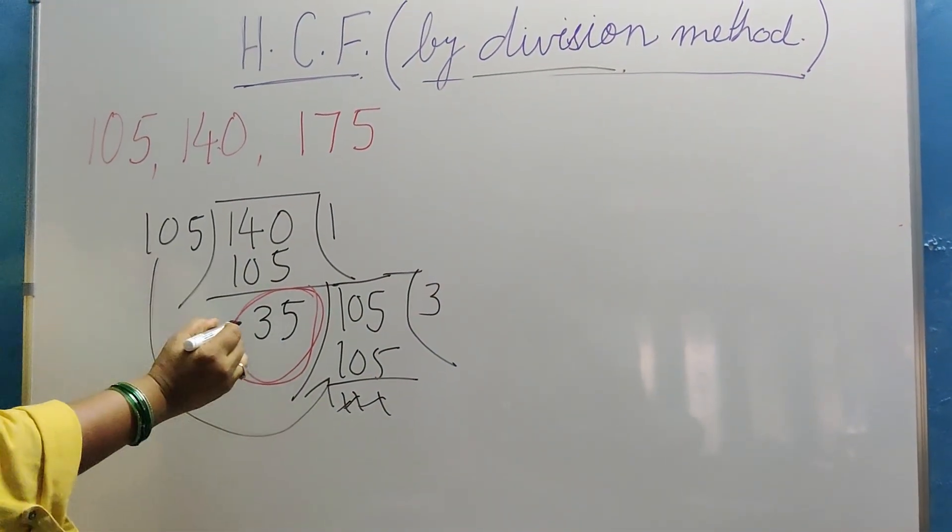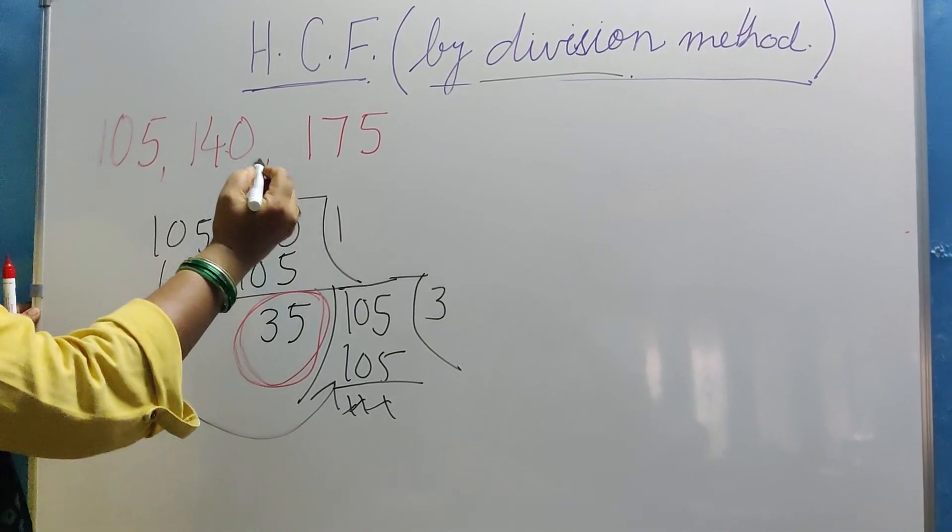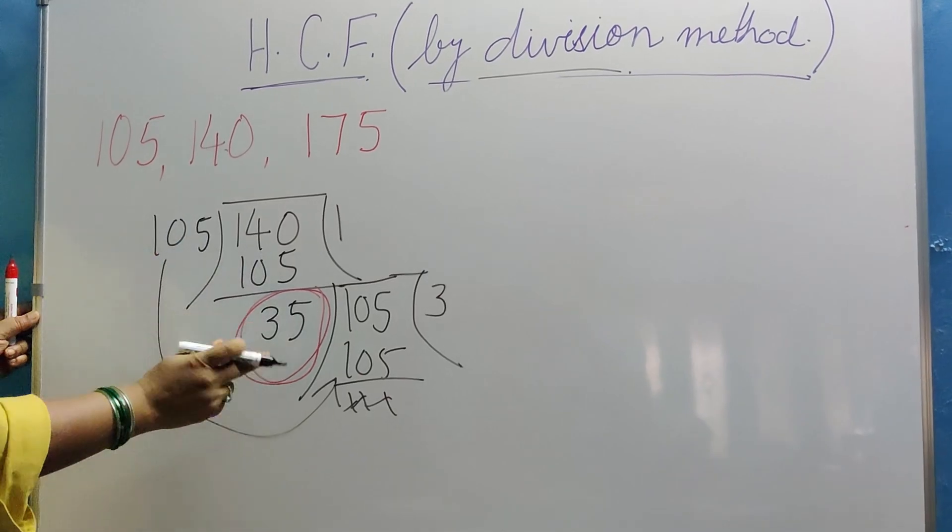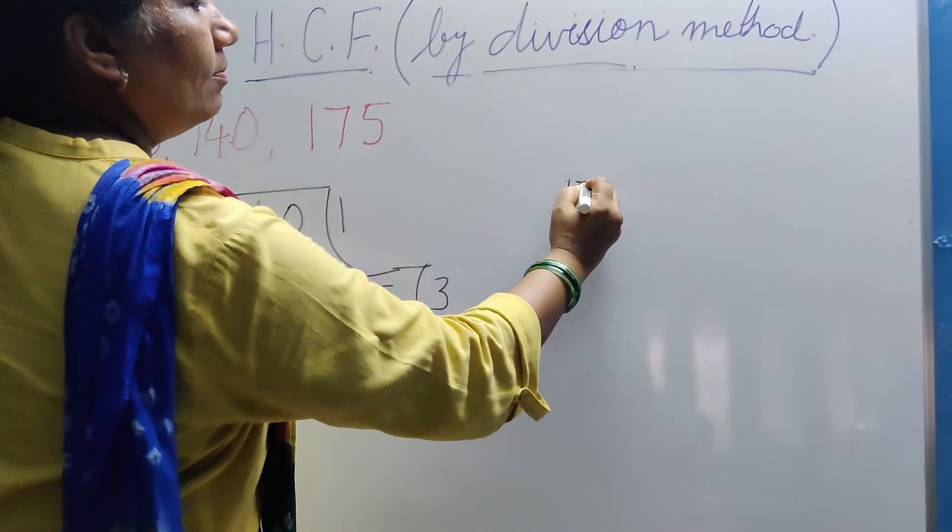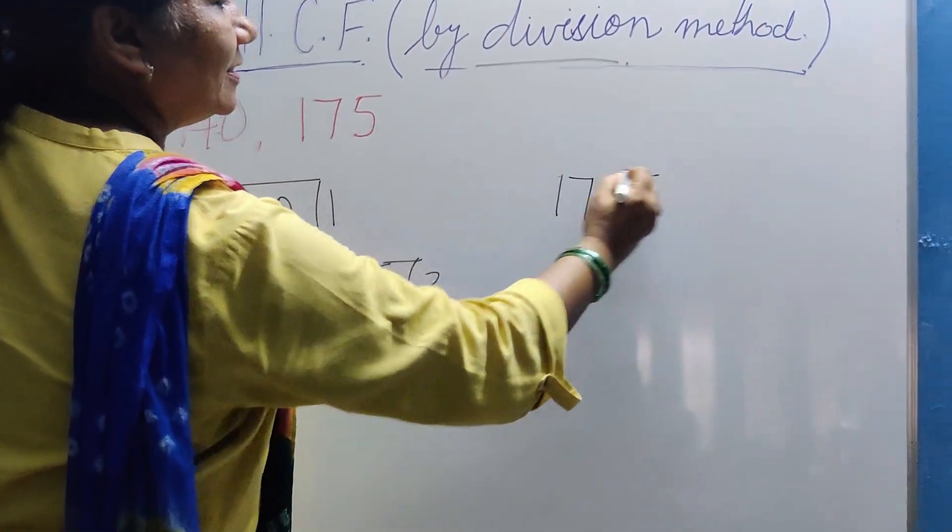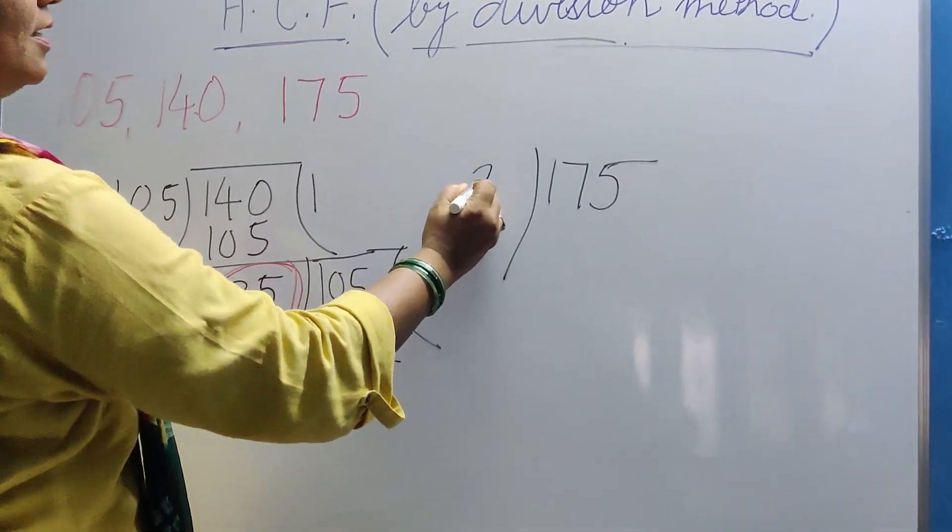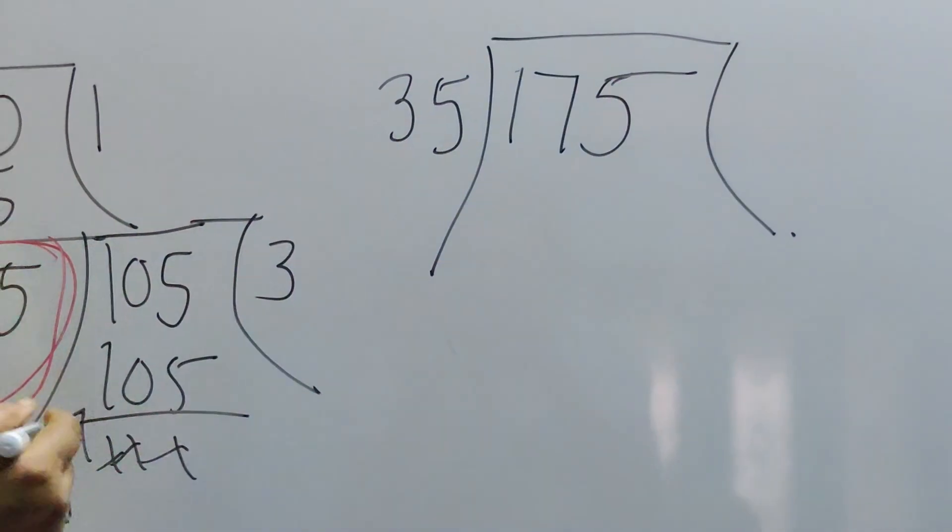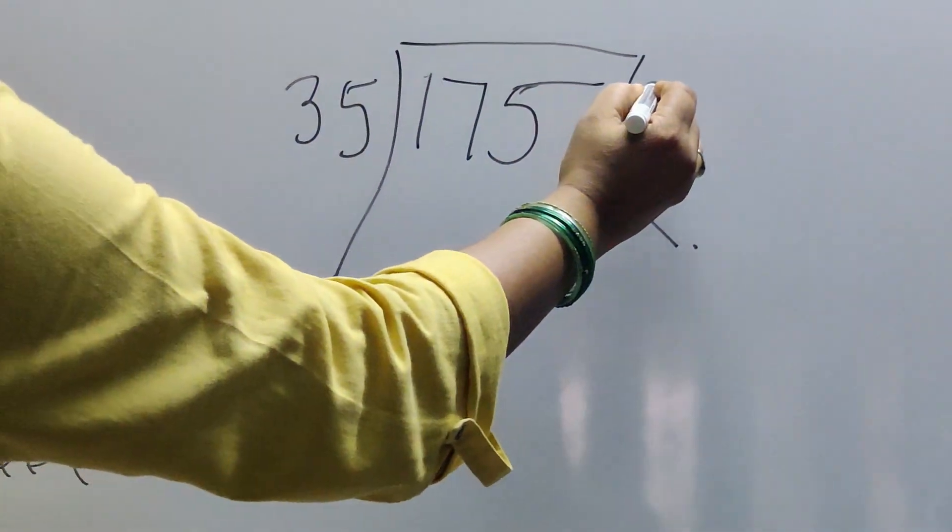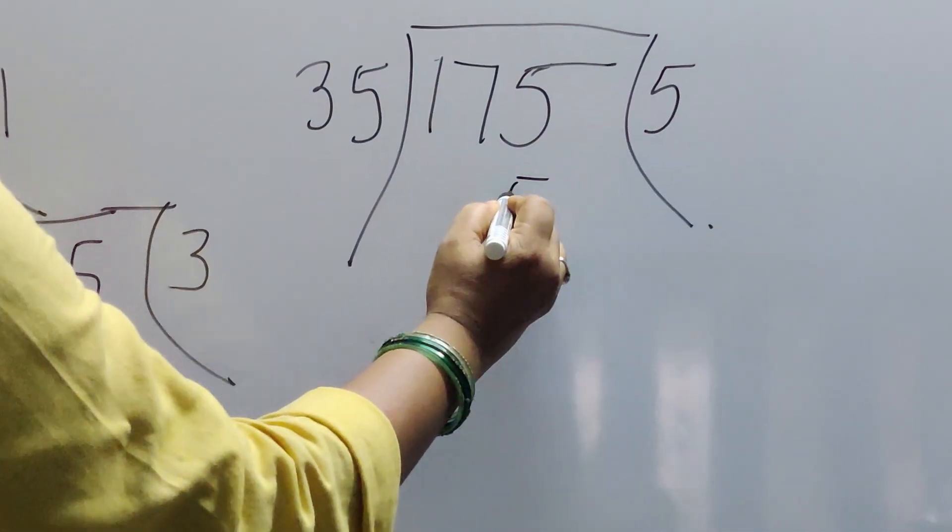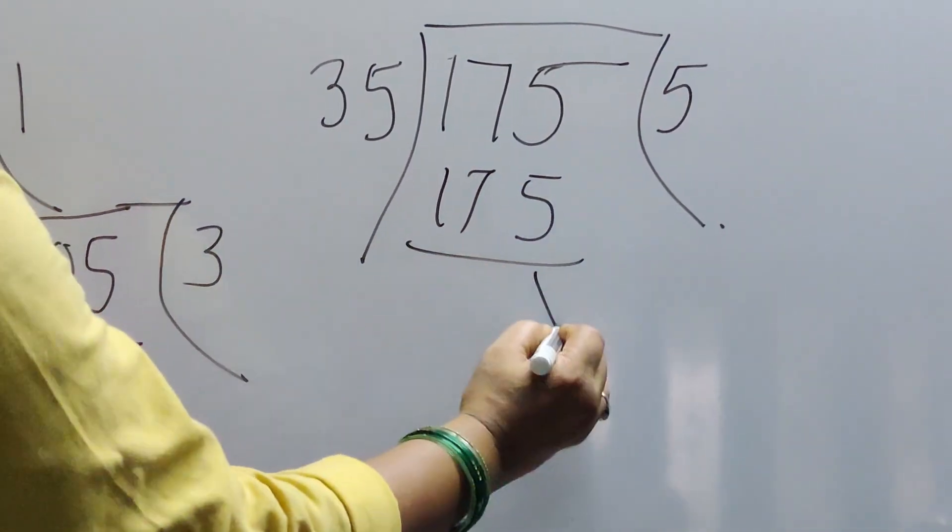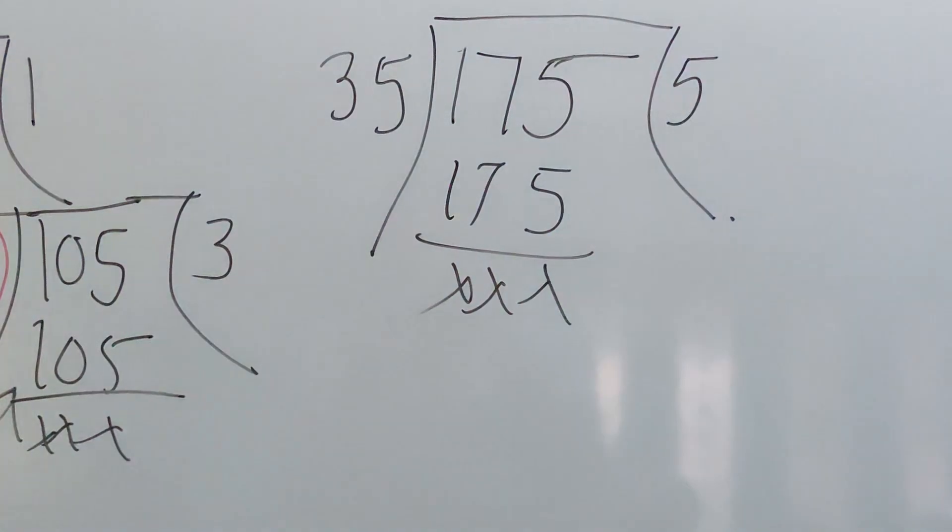Now this number, we have to divide 175 with this HCF of these two numbers. So one more step is added, that's all. 175 divided by 35. Now how many times will it go? 5, 5 is on 25, 2 in hand, 15, 3 is to 70. What is the remainder? 0.